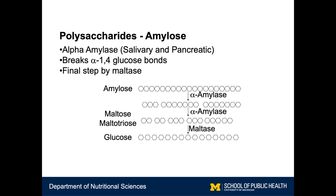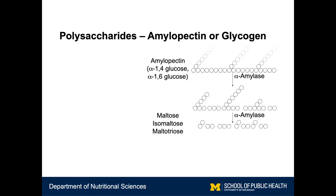These smaller disaccharides and trisaccharides are not able to be broken down by alpha amylase, so this now requires maltase, which can break the alpha-1,4 bond between two glucoses to release free glucose and allow glucose to be absorbed.